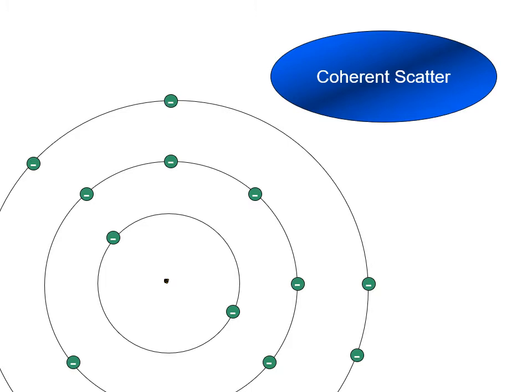The photon strikes one of the outer shell electrons and is absorbed by that electron. Since the photon didn't have enough energy to dislodge the electron, the electron stays in its orbital.